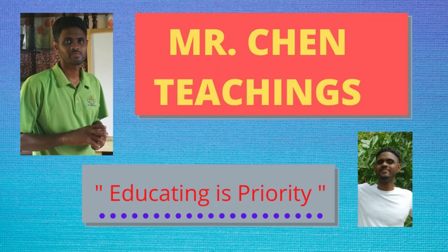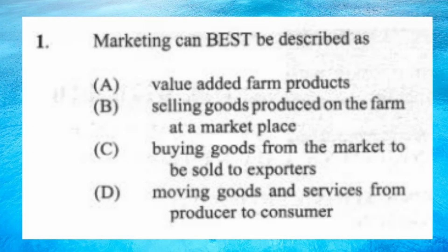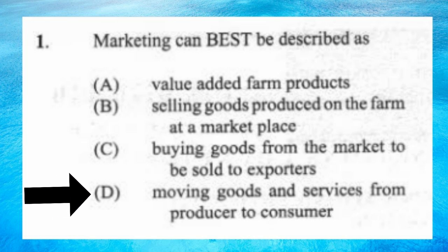This is the 2015 Agri CXC past paper, Paper 1. Question 1: Marketing can best be described as (a) value-added farm products, (b) selling goods produced on the farm at a marketplace, (c) buying goods from the market to be sold to exporters, (d) moving goods and services from producer to consumer. The answer is D. The marketing department's main responsibility is to get goods to the consumer; whatever needs to be done to get goods to the consumer is called marketing.